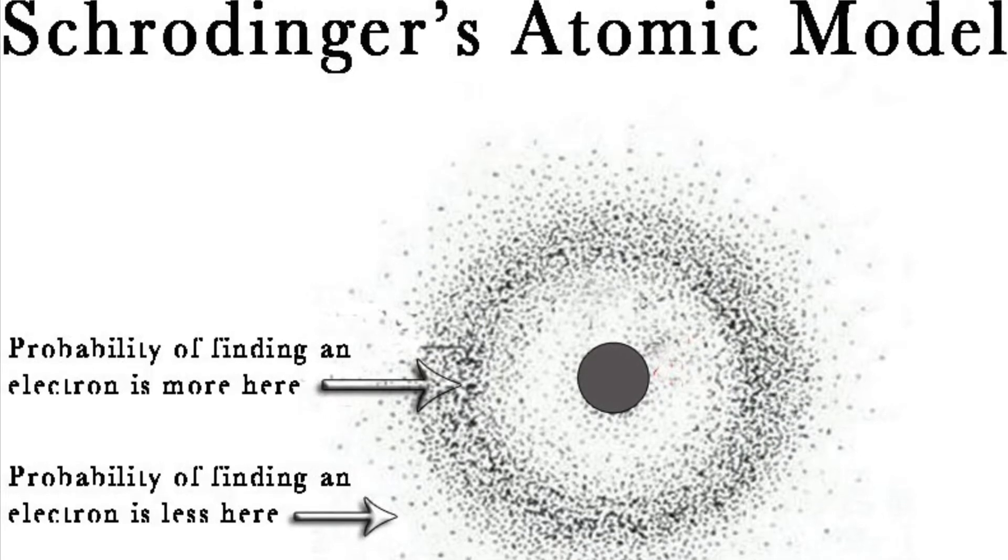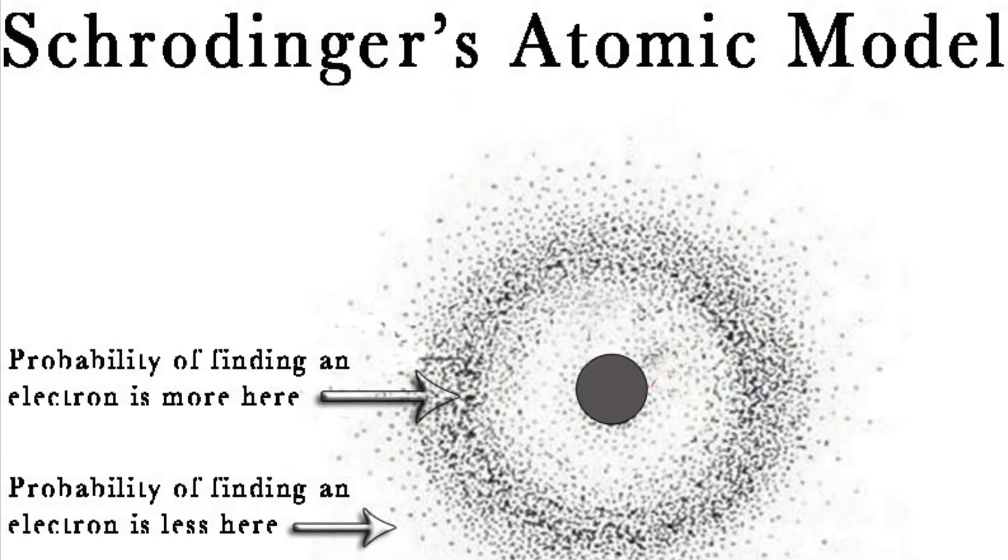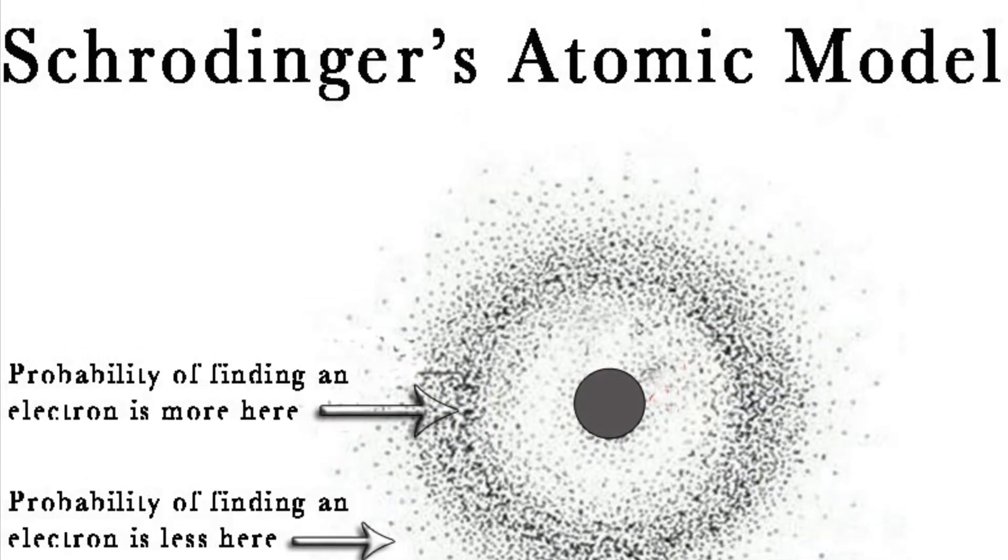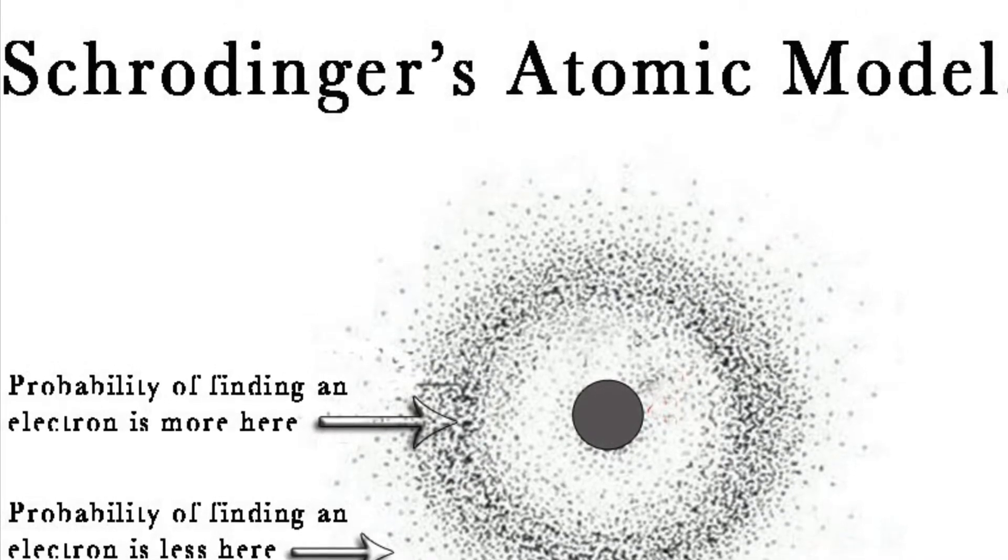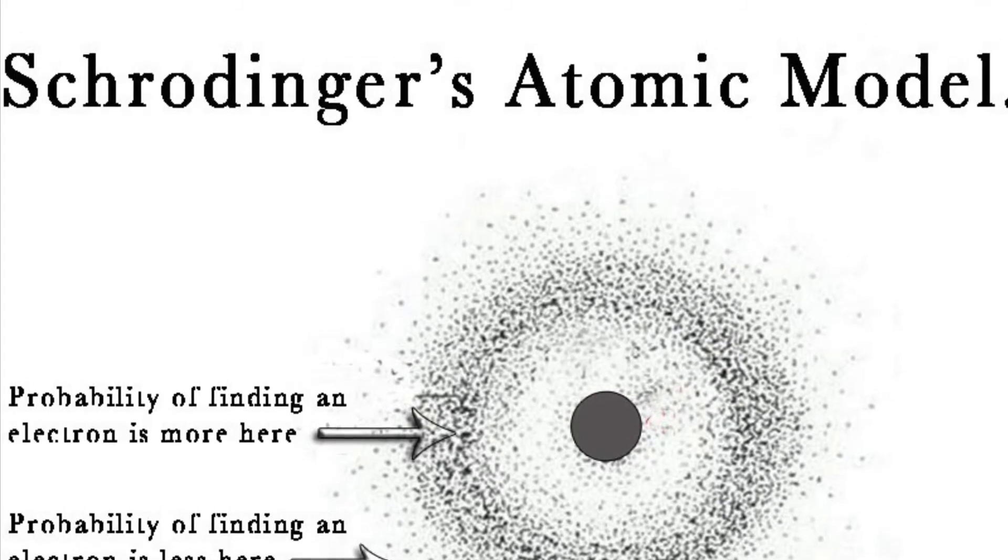Adding up all these probabilities, scientists can produce a picture of the electron that resembles a fuzzy cloud around the nucleus. The densest part of this cloud represents the place where the electron is most likely to be located. Although this seems imperfect, these models are probably the most accurate we will have for the foreseeable future.